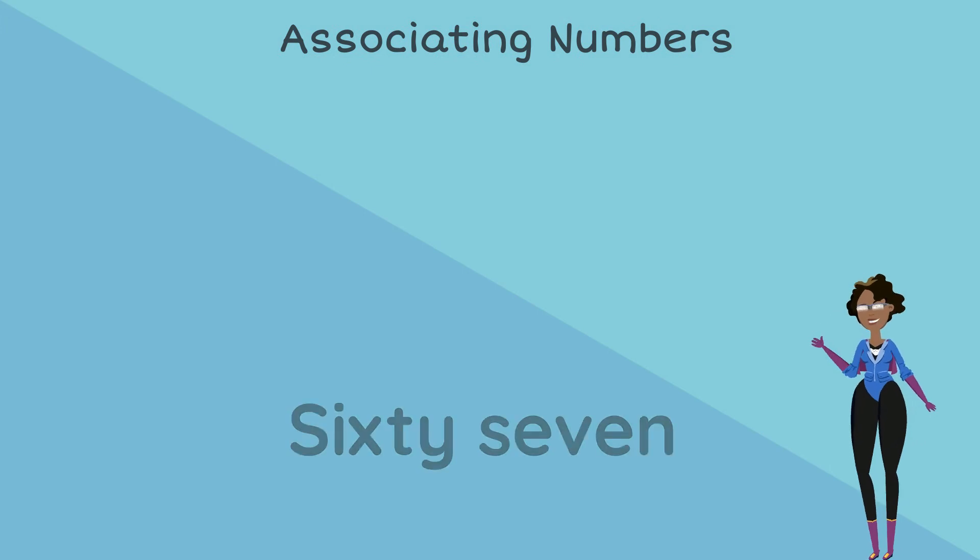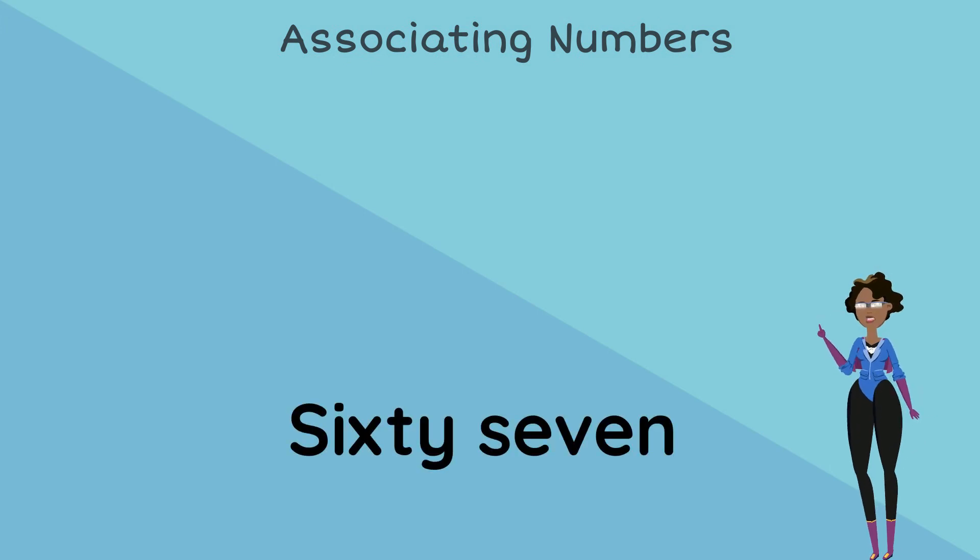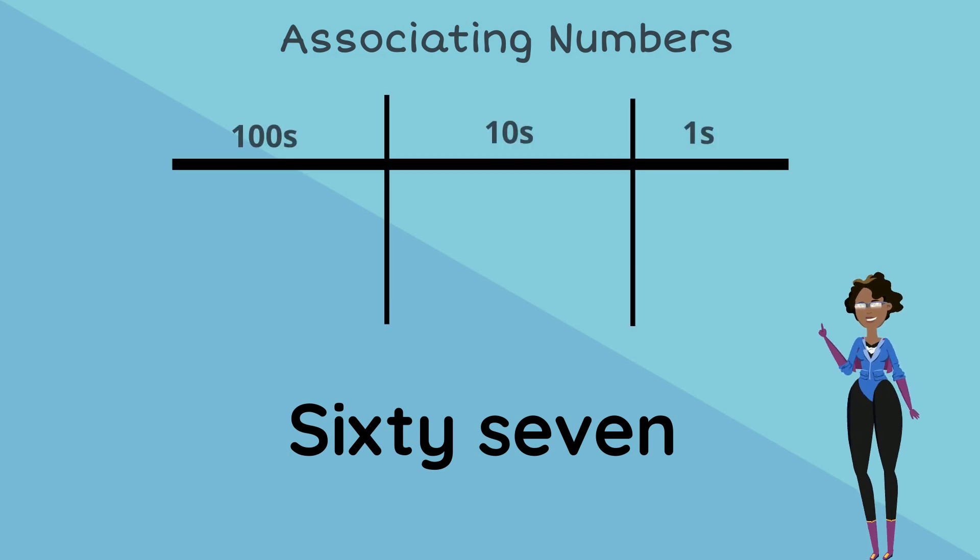Let's try 67. Let's insert these into place value columns. Again, let's set up 100s, 10s and 1s columns. There are no 100s, so that place remains empty. The 6 goes into the 10s place and the 7 goes into the 1s place. So we know the numbers for the word name. 67 is 6 and then 7. Well done!